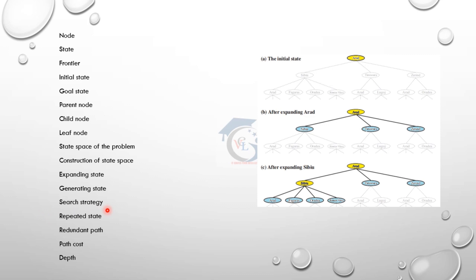Search strategy: in the search algorithm, we use a queue algorithm with insert and delete operations. We use the graph search algorithm. The unexplored state is the state not yet visited. The explored state is already visited. This is the simplified, analyzed state.